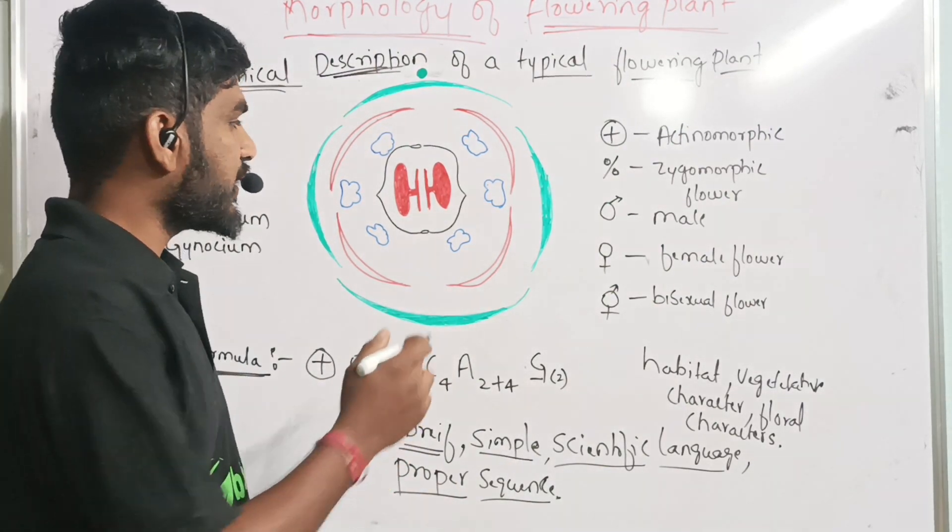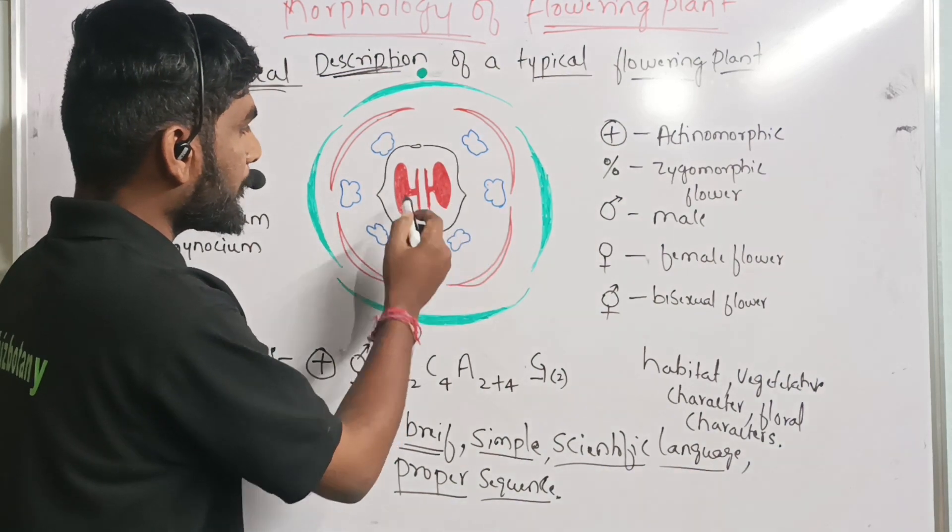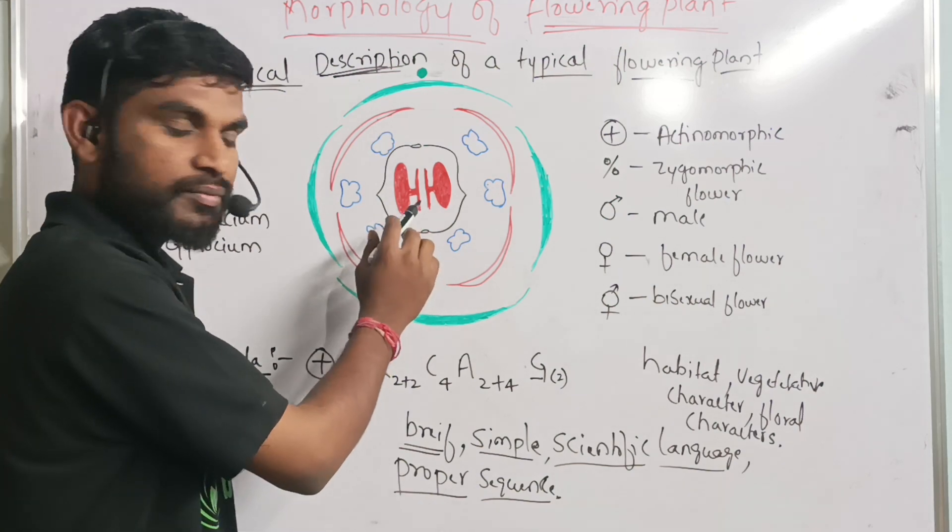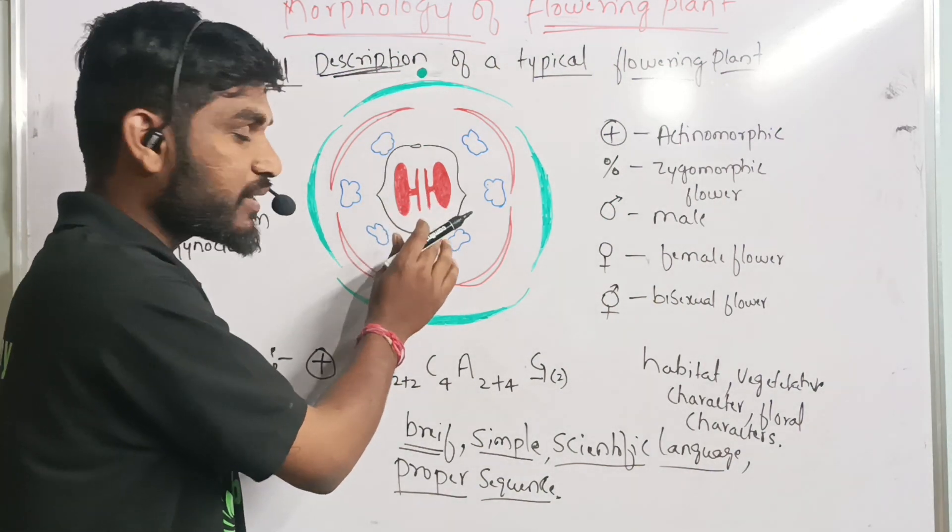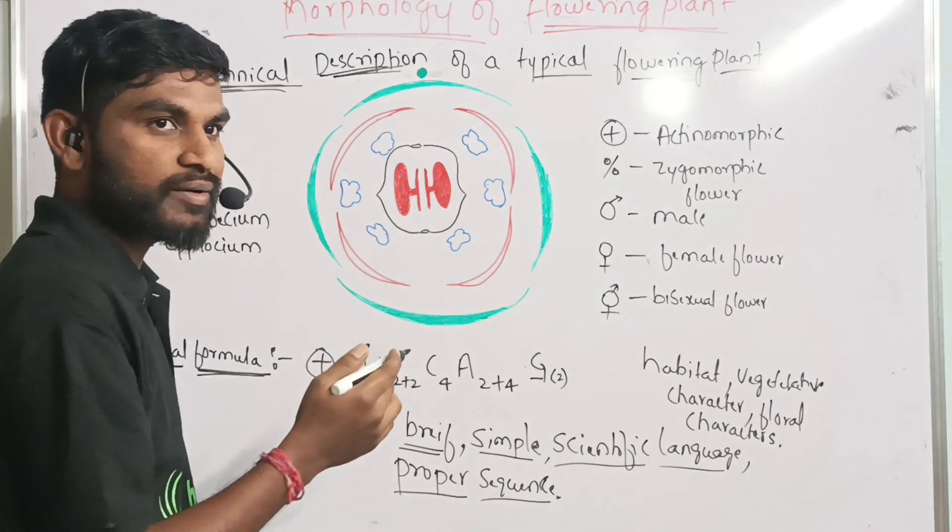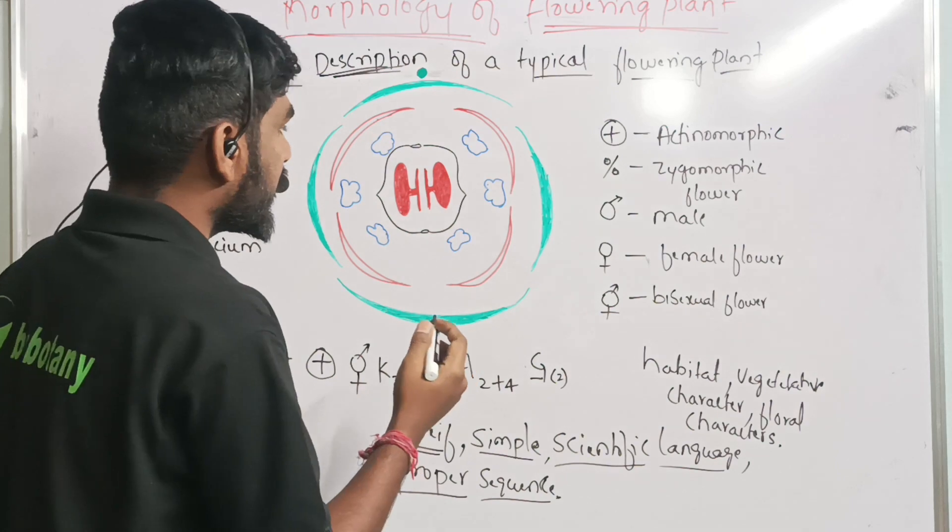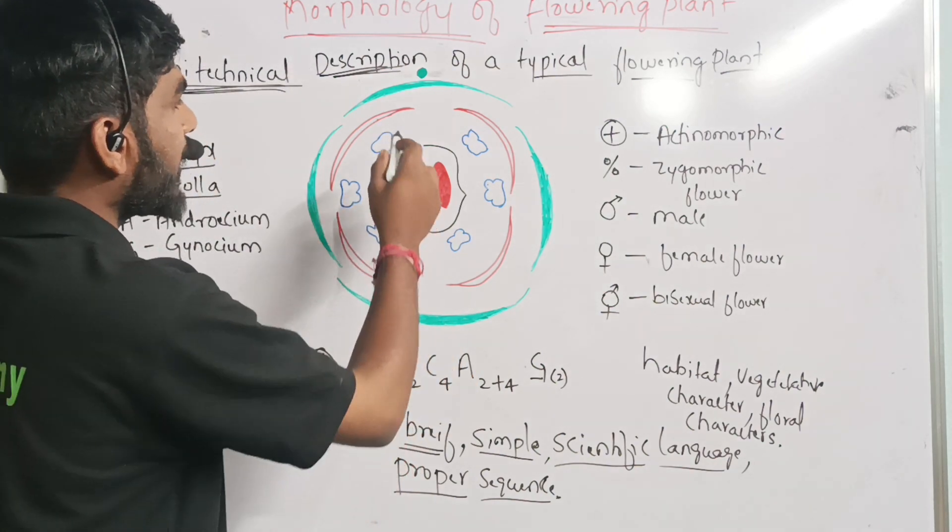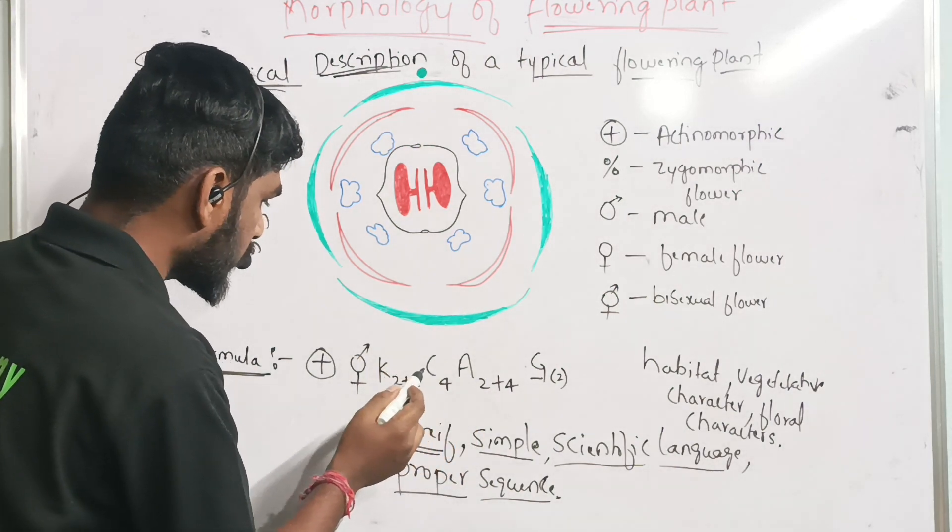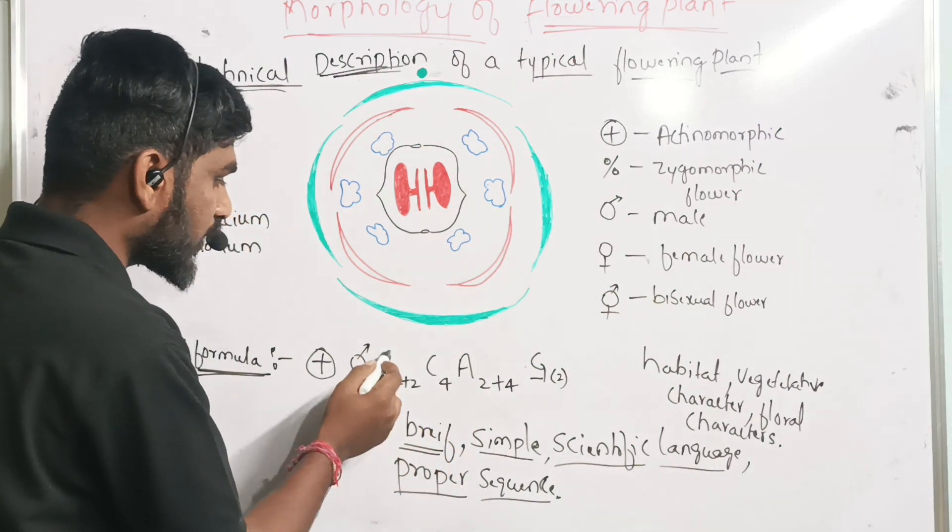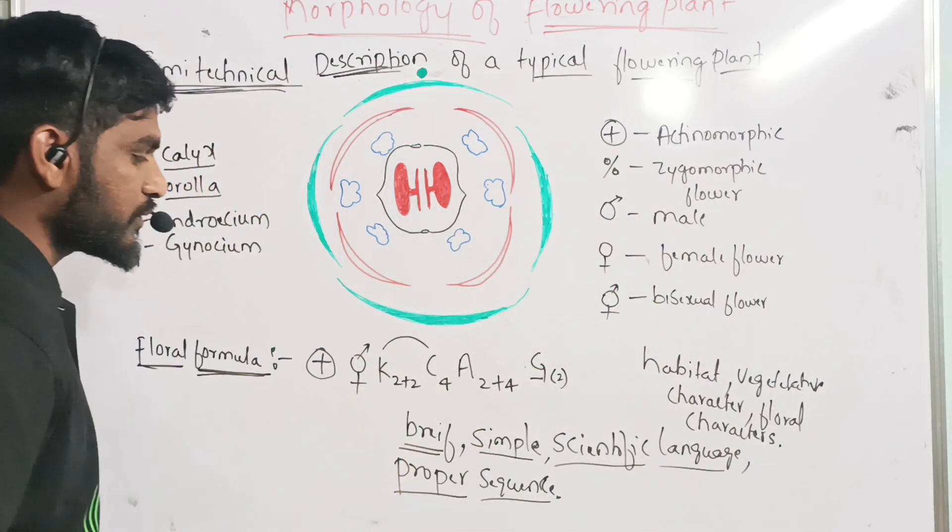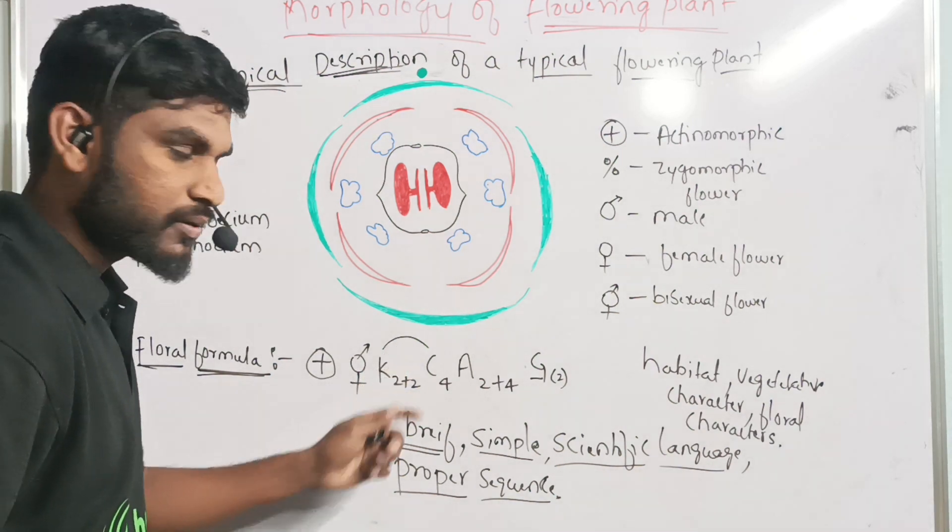Fusion is indicated by enclosing the figures inside the brackets. And adhesion will be indicated by drawing a line above the symbols. If calyx and corolla show adhesion, we can draw this type of lines.